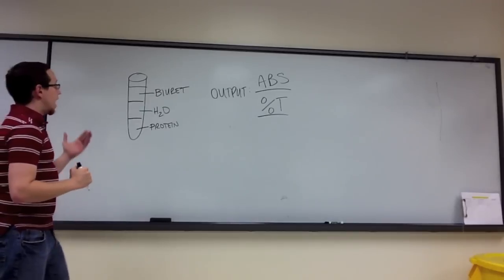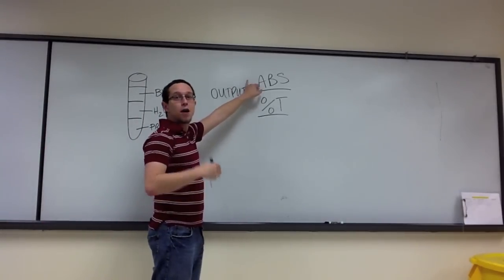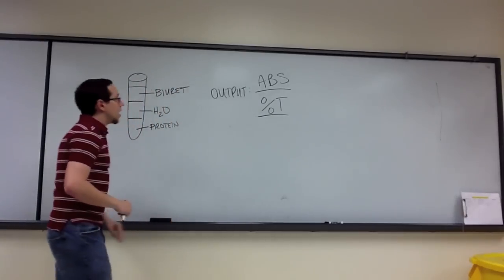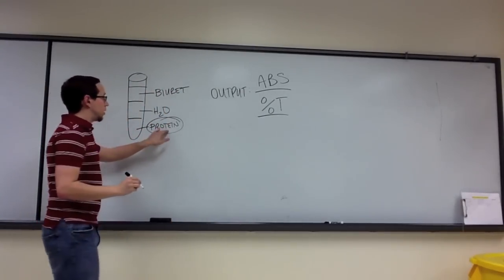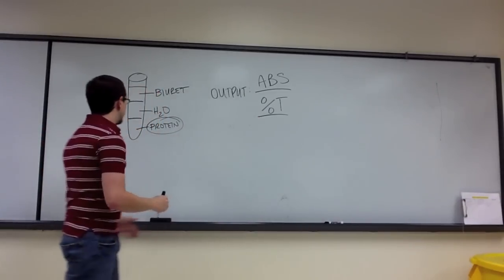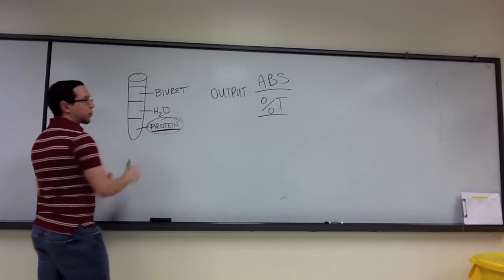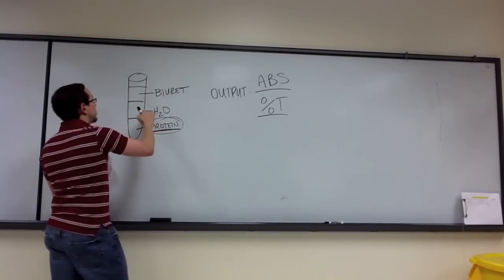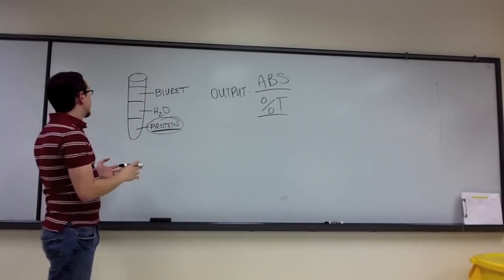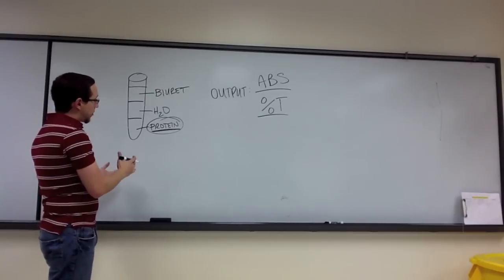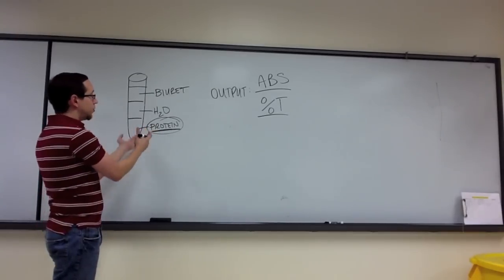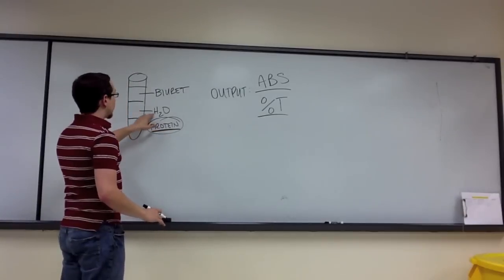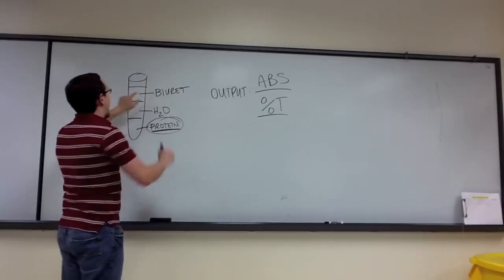Now let me ask you a question. How do I know that the absorbance I'm getting — the amount of light absorbed by this sample — and the percent transmittance, the amount of light not absorbed, are only due to the ability of the protein to absorb light? I only want to know how well the protein absorbs light. But I've also got water and biuret mixed in with my protein, and the glass of the test tube that's going to reflect some of the light.